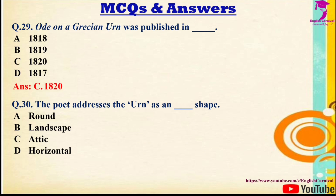Question 29/30: The poet addresses the Urn as an — shape. Options: A) Round, B) Landscape, C) Attic, D) Horizontal. The correct answer is C — Attic.